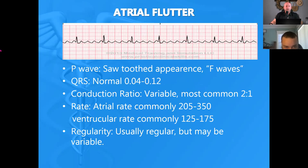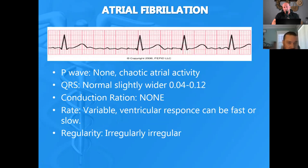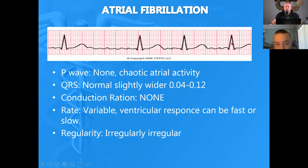A-fib or A-flutter: we know it's A-flutter because of those characteristic F waves that look like the teeth on a saw. Count how many P waves before every QRS — one, two, three, four — so this is atrial flutter with a four-to-one conduction ratio. Just look at the patient, find out what's going on, support the vital signs. If it's new-onset A-flutter you can give cardizem, but maybe oxygen and some fluids might cure this. A-fib: weird, chaotic, no P waves, and QRS complexes doing whatever they want — irregularly irregular. If it's new-onset A-fib you can give cardizem, but if it's been going on for a while, just support the vital signs.